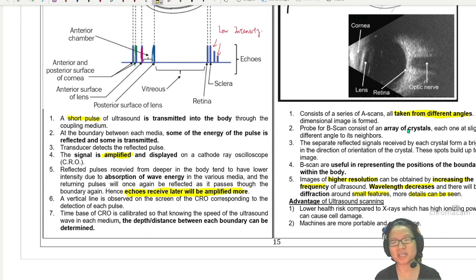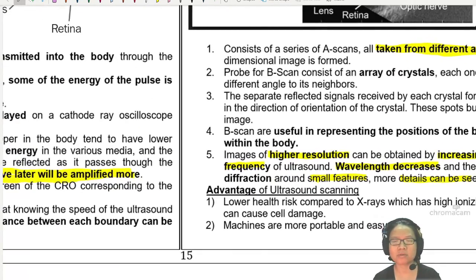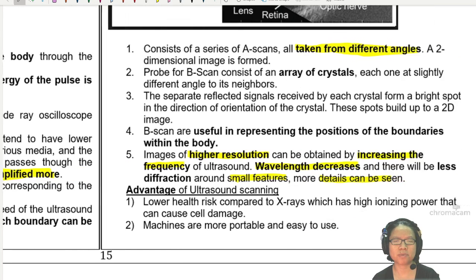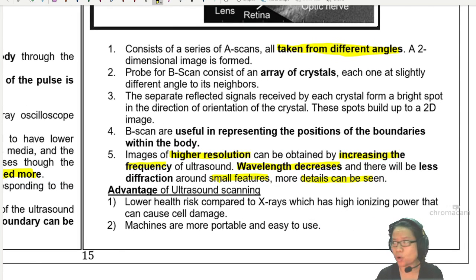And finally, when it comes to the advantages of ultrasound scanning, obviously we know that sound has a lower risk, much lower risk compared to x-ray because sound got no ionizing power. If sound has ionizing power, what happened to your ears by now? Won't cause cell damage and a lot of ultrasound machines are portable right now. It's legit something you can pack in the bag and bring along with you, which is why sometimes if you look at people giving birth of children at home, the midwife or the doula will carry a portable ultrasound and a Doppler to monitor the child's heart rate. I'm not going to talk more about Doppler ultrasound, but that's it for the chapter.